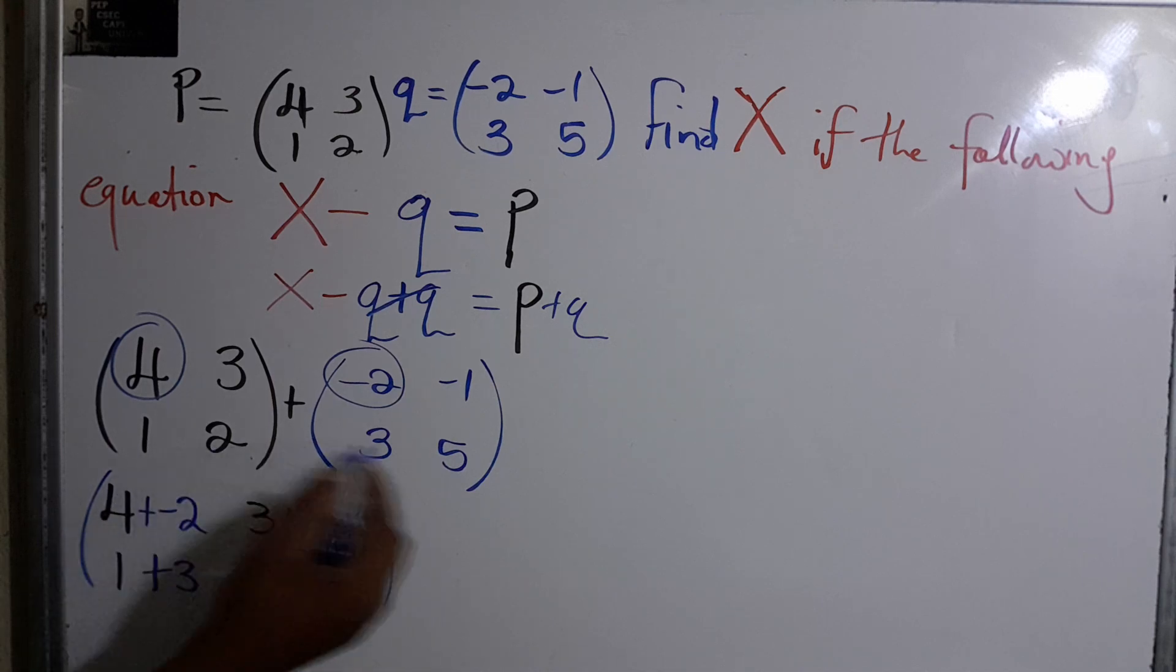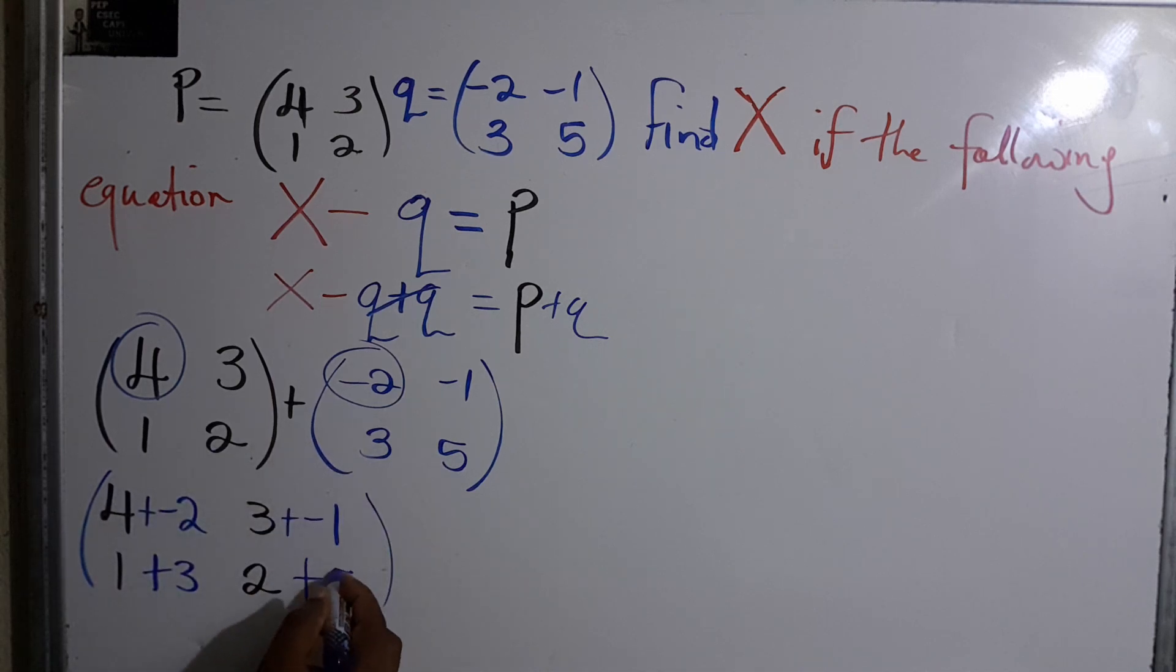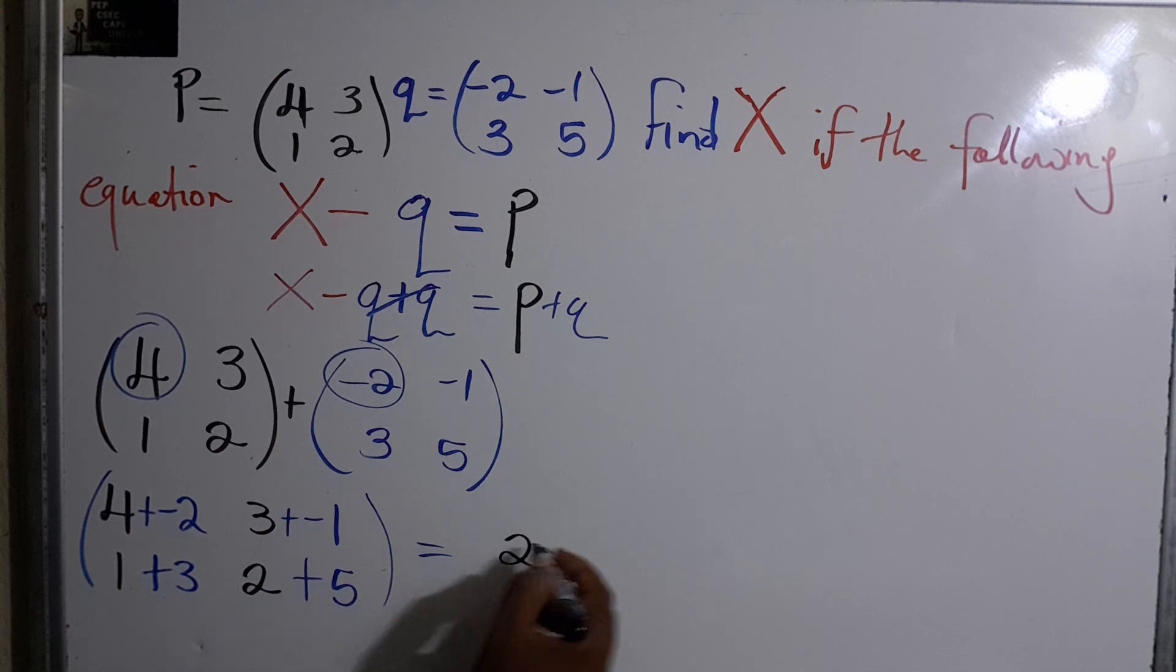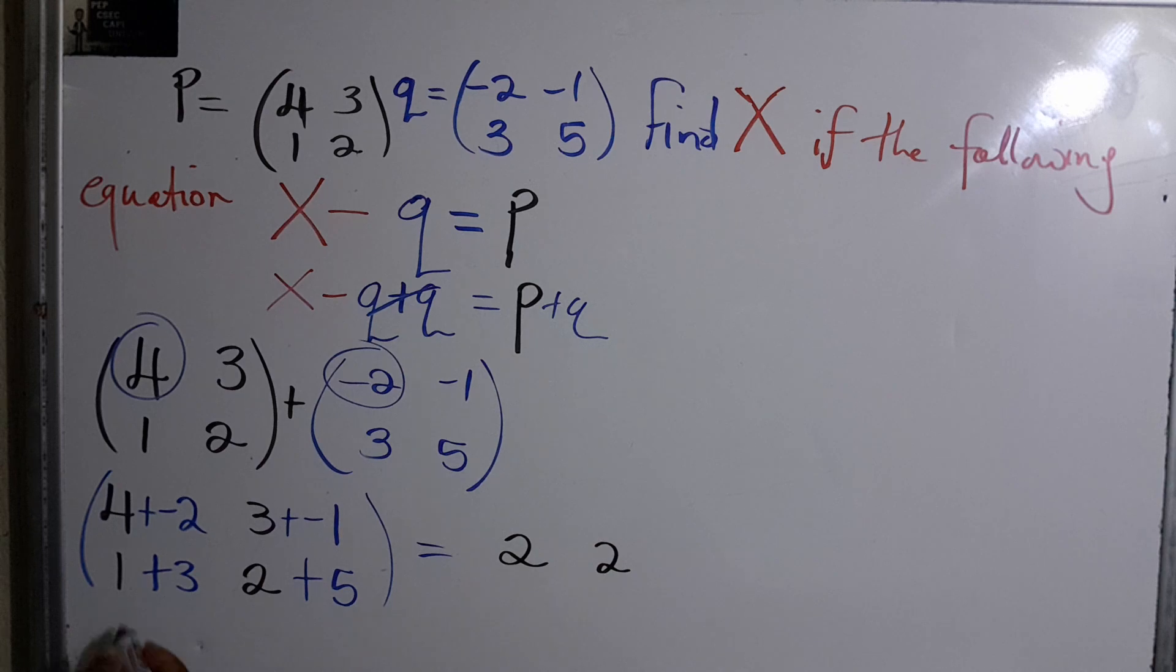Let's simplify and get our answer. We have 4 plus -2, that gives us positive 2. 3 plus -1 gives us 2 also. 1 plus 3, that is 4.